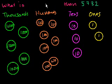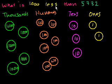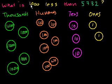So let's say: what is 1,000 less than 5,732? Well, this is 5,732. If I say 'what is 1,000 less,' I'm essentially going to take away a bucket of 1,000, or a can of 1,000 marbles, or a $1,000 poker chip.